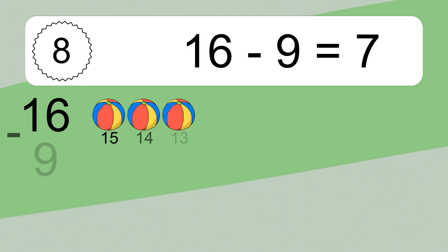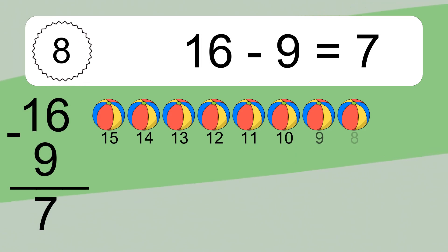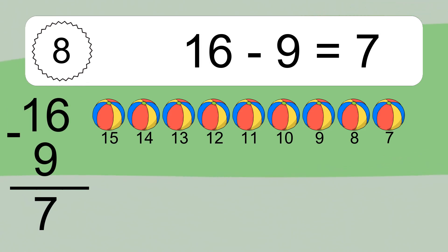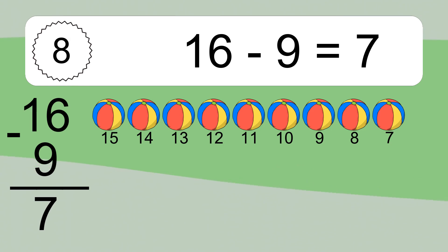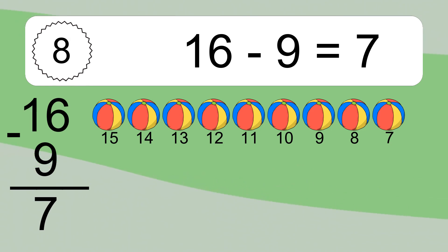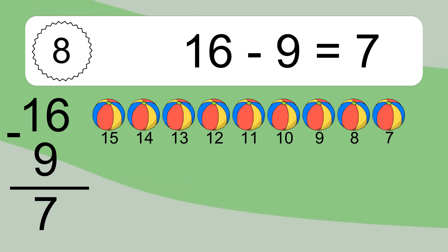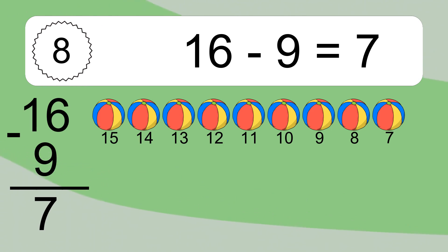16 minus 9 equals 7. Let's count it: 15, 14, 13, 12, 11, 10, 9, 8, 7.